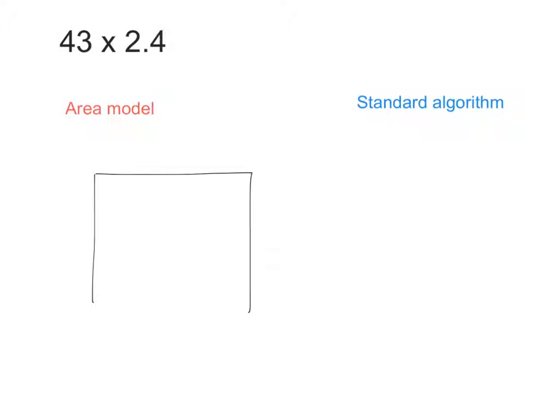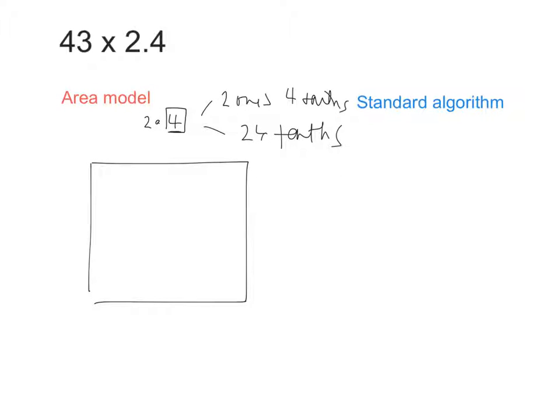So I'm just going to draw an area model just like I normally would. And at the top, I have the factor 2.4. Now, I want to rename that so that I don't have a decimal. So what place value is the 4 in? Tenths. So I could say that this is 2 ones and 4 tenths, or could I also call it 24 tenths? Let's call it 24 tenths. So what I'm going to do at the top of my area model is I'm going to separate it into 20 tenths and 4 tenths. Then my other factor is 43. I could split that up just like I normally do, 40 ones and 3 ones.